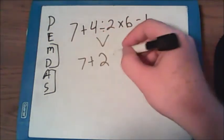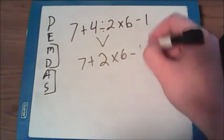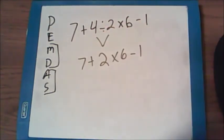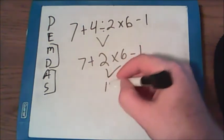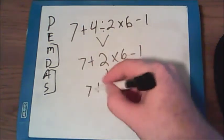I will bring down everything else from the problem because I'm only going to do one thing at a time. At this step, multiplication goes before either the addition or the subtraction. So 2 times 6 gets me to 12. I bring down all the other numbers.